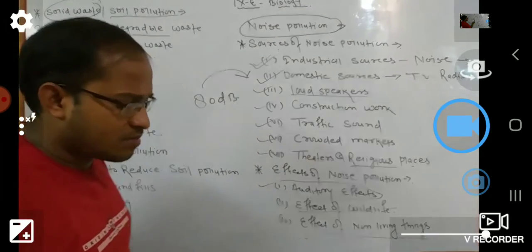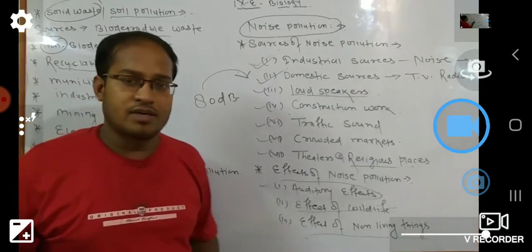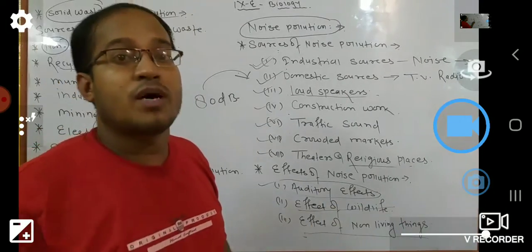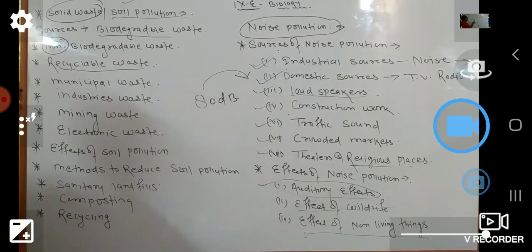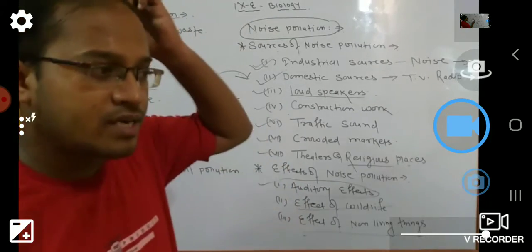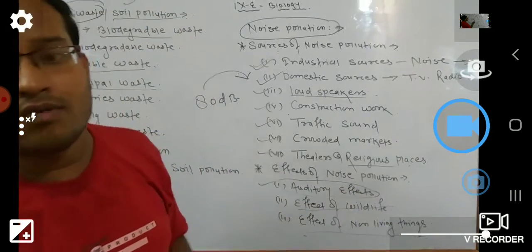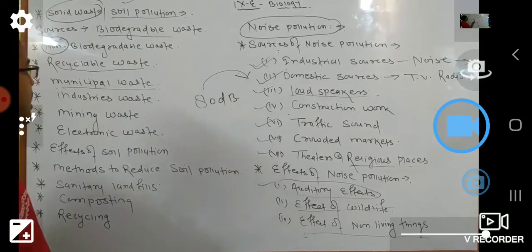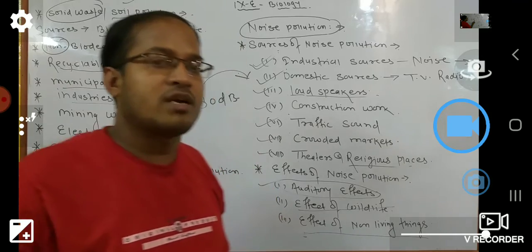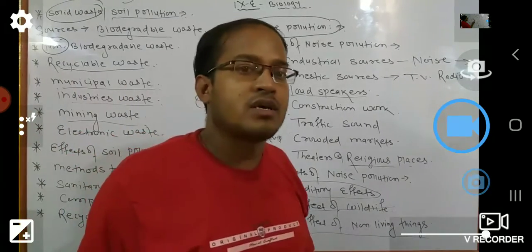The sources of soil pollution include: recyclable waste — items we can recycle such as paper, newspapers, copy papers, and plastics are often thrown into the soil, contaminating it. Municipal waste includes dust materials and contaminated things from sewage and the outer environment that are thrown into the soil. Industrial waste involves many materials released from industries that mix into the soil and pollute it. Mining waste also involves mineral waste that pollutes the soil.